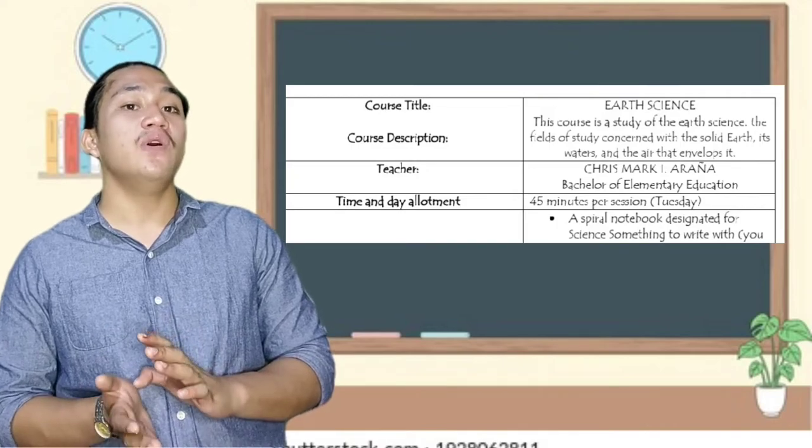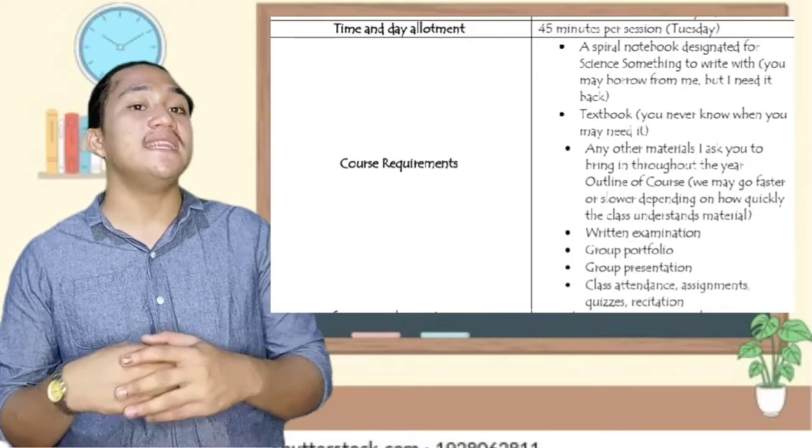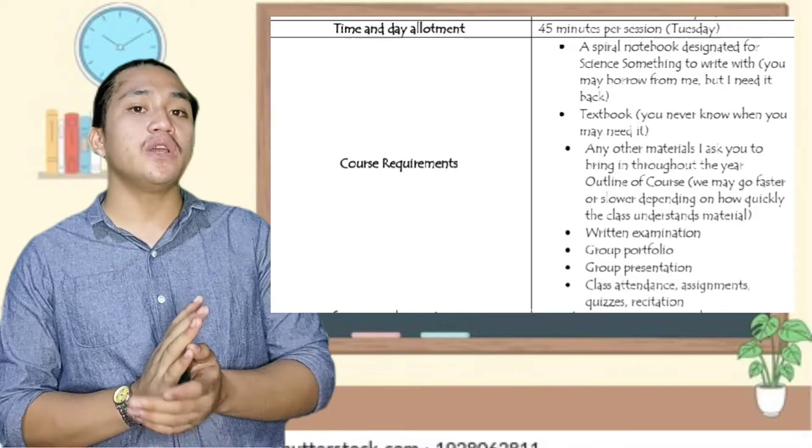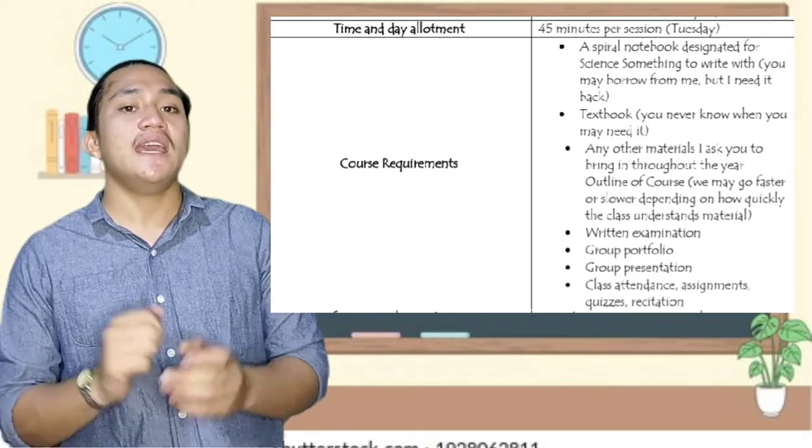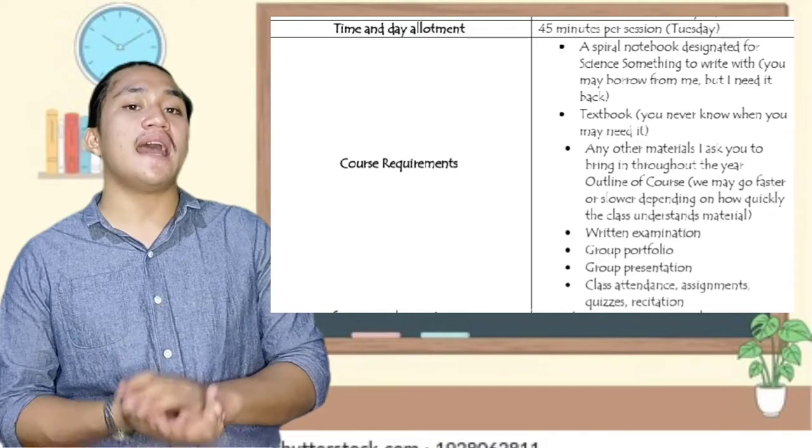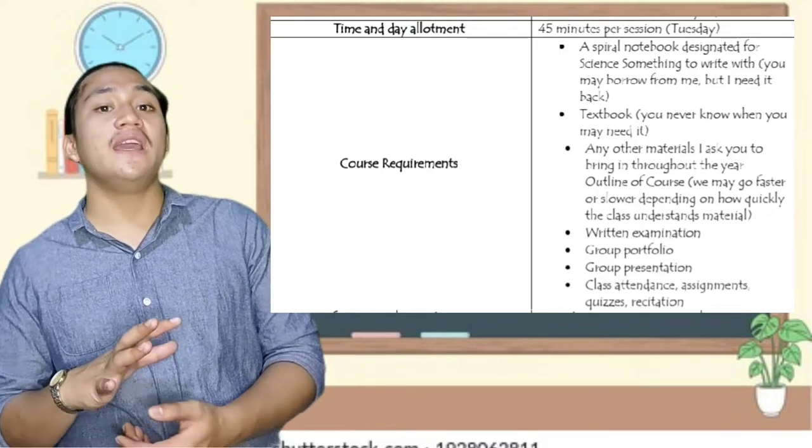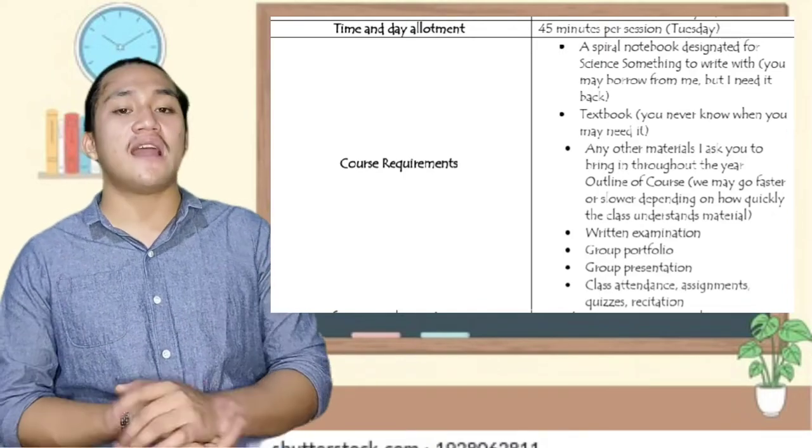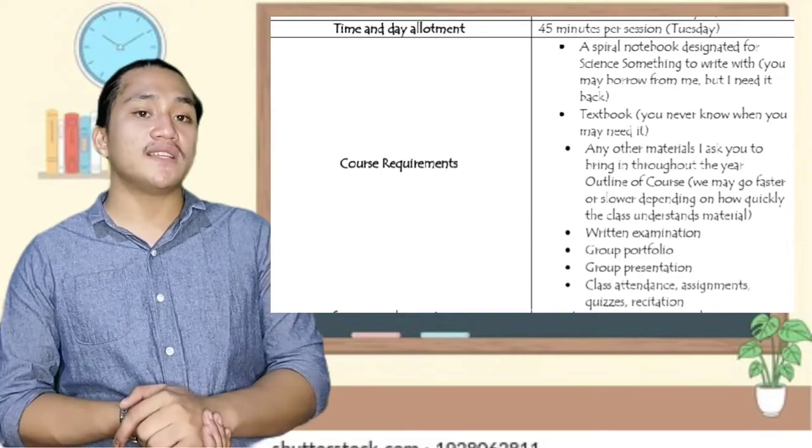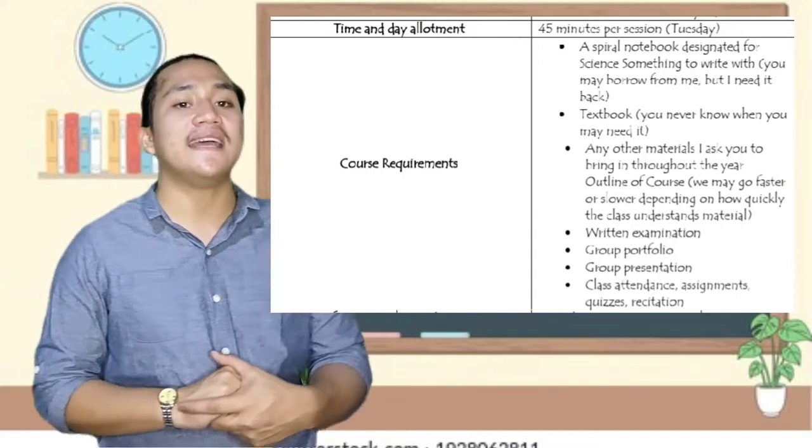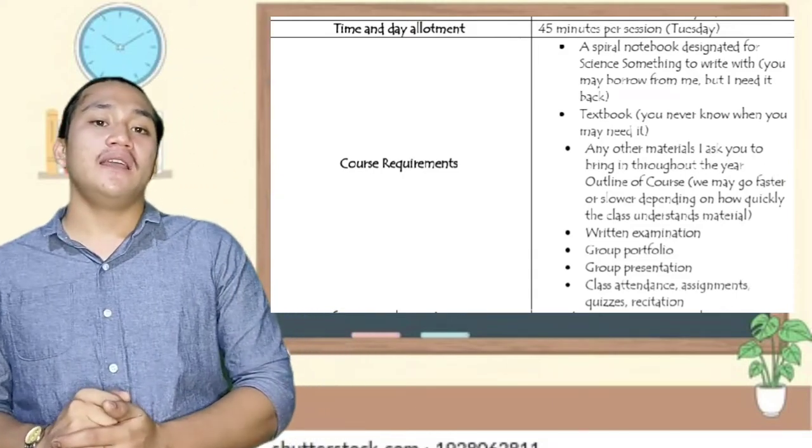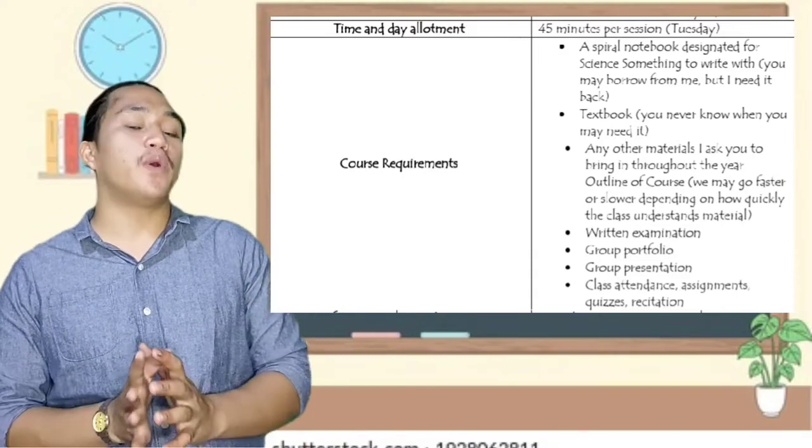A spiral notebook designated for science, something to write with (you may borrow from me but I need it back), textbook (you never know when you may need it), and any other materials I ask you to bring throughout the year. Outline of course: we may go faster or slower depending on how quickly the class understands the material. And we have written portfolio, group presentation, and class attendance.